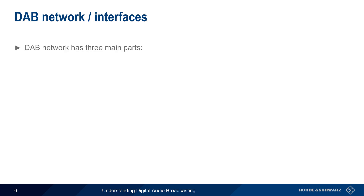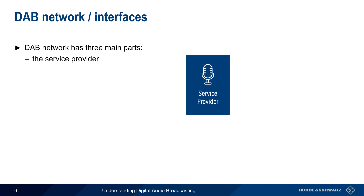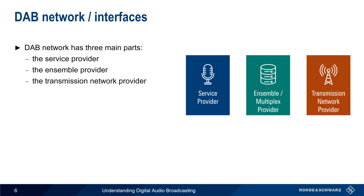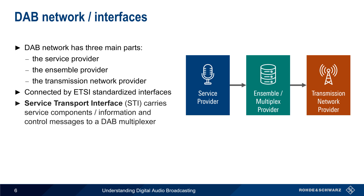DAB networks produce ensembles and multiplexes using three main functional blocks: the service provider, the ensemble/multiplex provider, and the transmission network provider. The interfaces between these blocks are standardized by ETSI, which enables the blocks to be developed and operated by different providers or entities. The service transport interface is used to carry the service components — that is, voice and data streams — and related control information, to a DAB multiplexer.